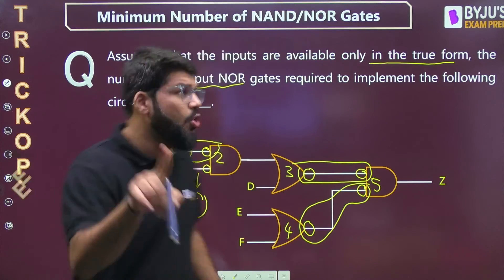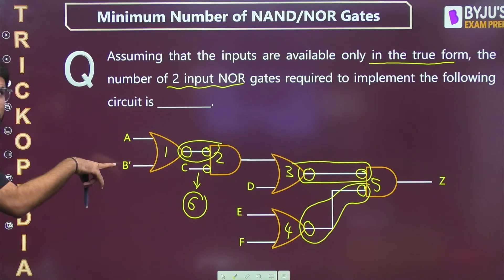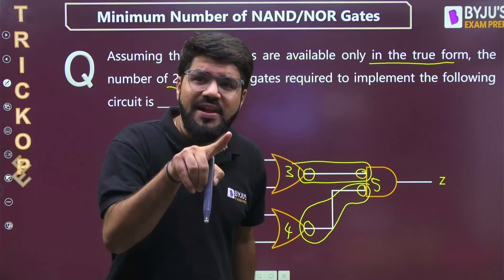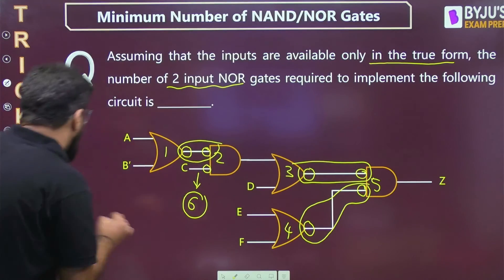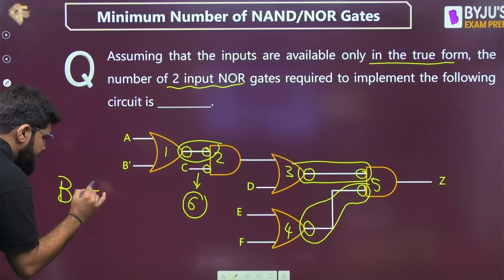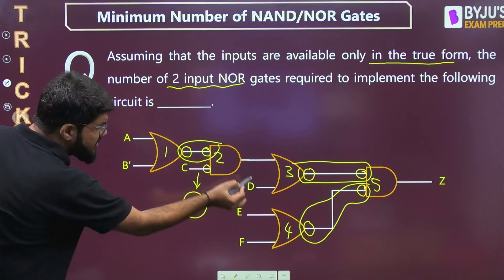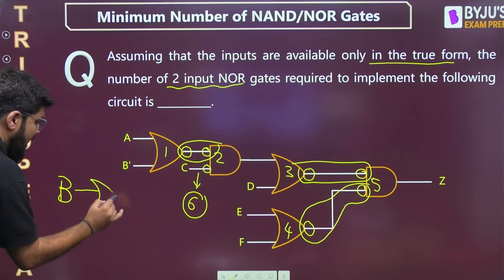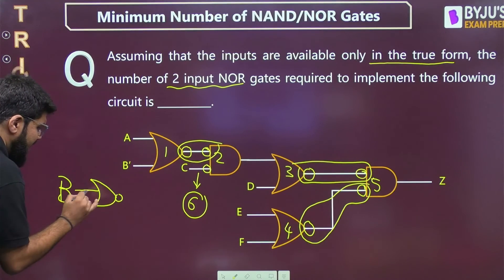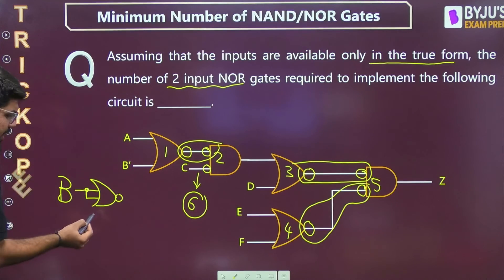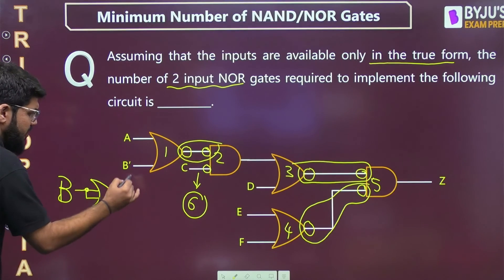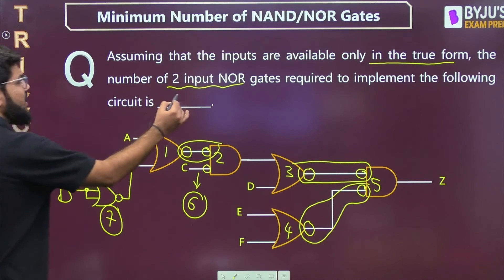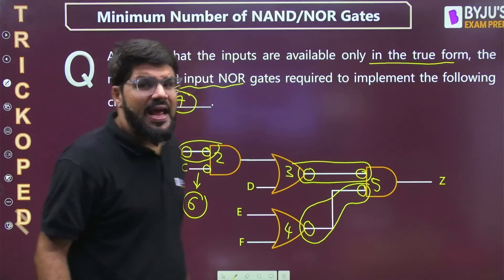But is the answer 6? No. The inputs are only available in true form. Looking at the circuit, it uses B̅, but B̅ is not available — only B is available. All other inputs A, D, E, F, C are used in true form, so those are fine. But for B̅, I need an inverter, which is one NOR gate with shorted inputs giving B̅. That is NOR gate number 7. So the answer is 7.